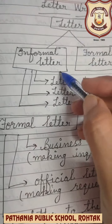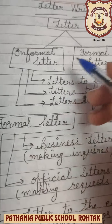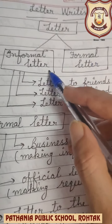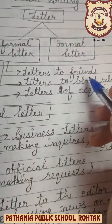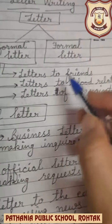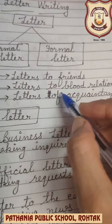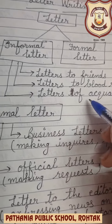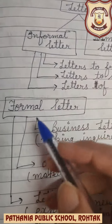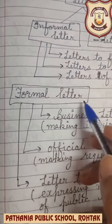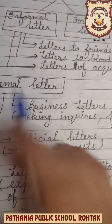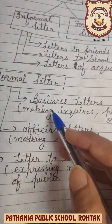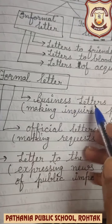Letters are of two types: informal letter and formal letter. Informal letters are letters which are written to friends, letters written to close relations, and letters written to relatives. Formal letters are also called business letters.